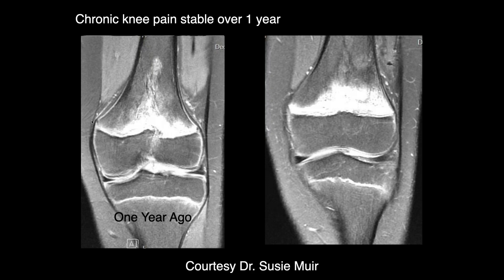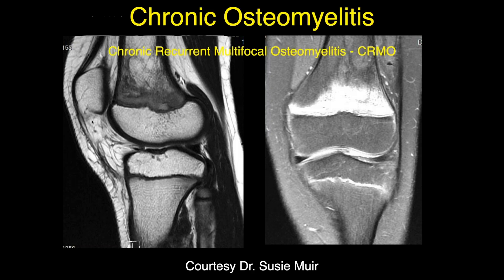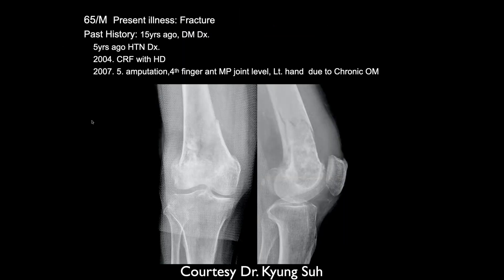It's been stable for a year — a little bit worse, but it's bounded by the physes, so this could be chronic osteomyelitis as well. The patient had some other areas as well, and they finally decided the patient had chronic recurrent multifocal osteomyelitis, or CRMO.